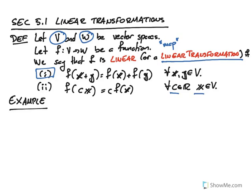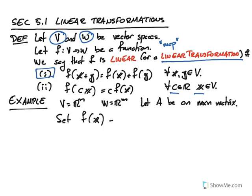And you probably recognize this as the properties of the matrix vector multiplying. In a sense, all linear maps, at least between finite dimensional vector spaces, are generalizations of the matrix vector multiplication. So our archetypical example here is that v equals R^n, w is R^m, and then let A be an m by n matrix. If we set f of x to be simply Ax, then f is linear.